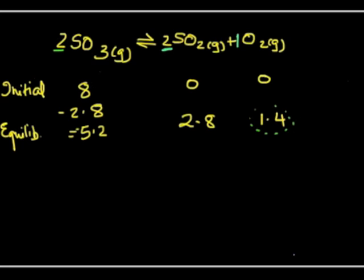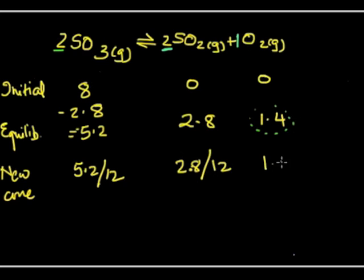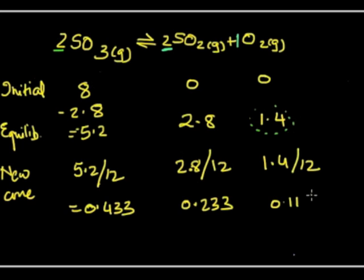We divide 5.2 by the volume which is 12, divide 2.8 by 12, and divide 1.4 by 12. This gives 0.433, this gives 0.233, and this gives 0.117. Now we are going to substitute this into our Kc equation.